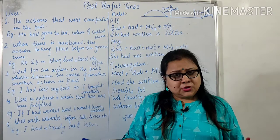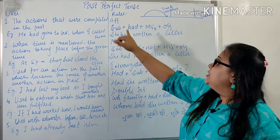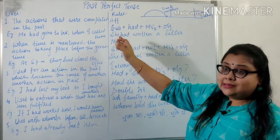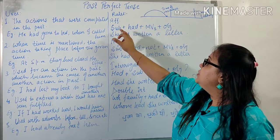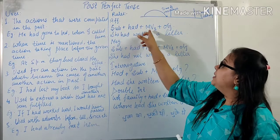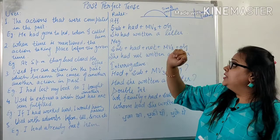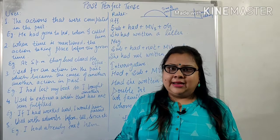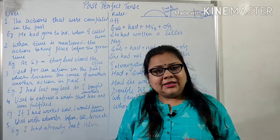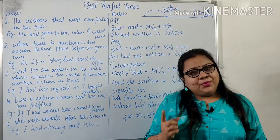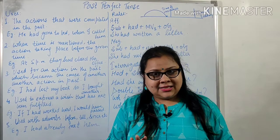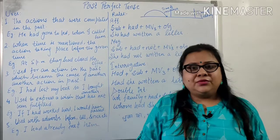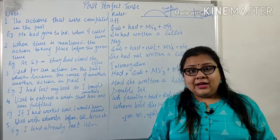Talking about the rules now in affirmative or positive sentences, the rule goes: Subject + had + main verb third form + object. The good thing about past perfect is that 'had' is used for both singular and plural subjects — you need not remember whether the subject is singular or plural, both are going to take 'had' as the helping word.